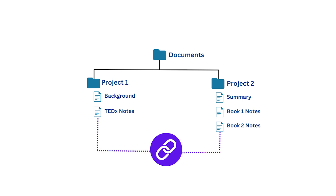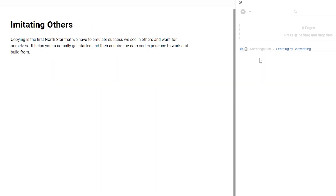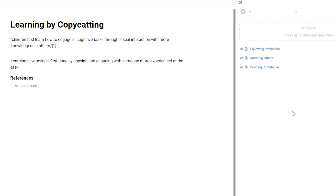In addition to making use of tags, you can also add direct links between two of your files or notes. This creates a specific and direct connection between those two files wherever they are located in your system. In contrast to hyperlinks, these links are bi-directional — a two-way link — so whichever note you happen to be in, you will always be able to see the connection to the other note.